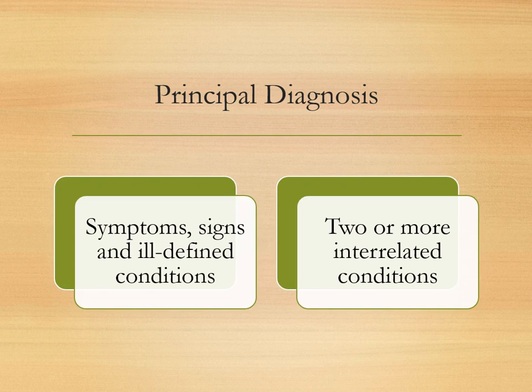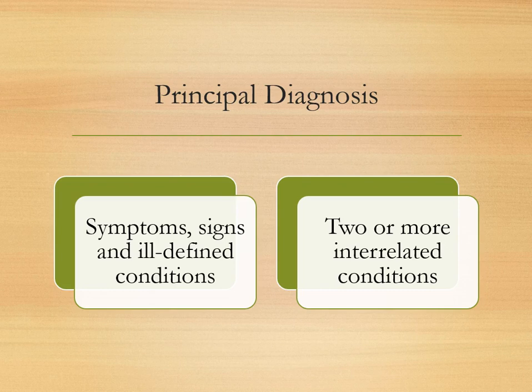Another guideline covers situations where two or more interrelated conditions each meet the definition of principal diagnosis. By interrelated, we mean diseases in the same ICD-10-CM chapter or manifestations characteristically associated with a certain disease. In those situations, either condition may be sequenced first unless the circumstances of the admission, the therapy provided, the tabular list, or the alphabetical index indicate otherwise.